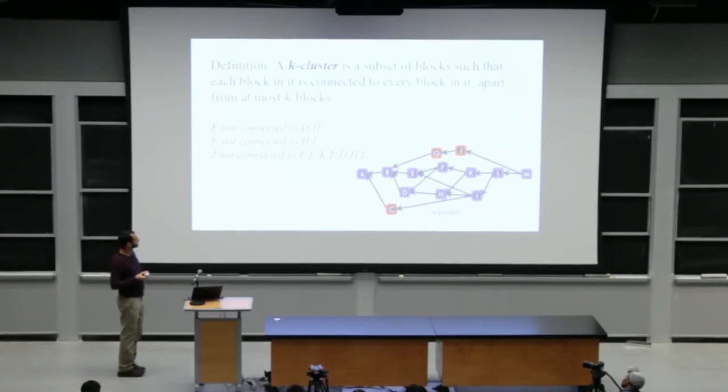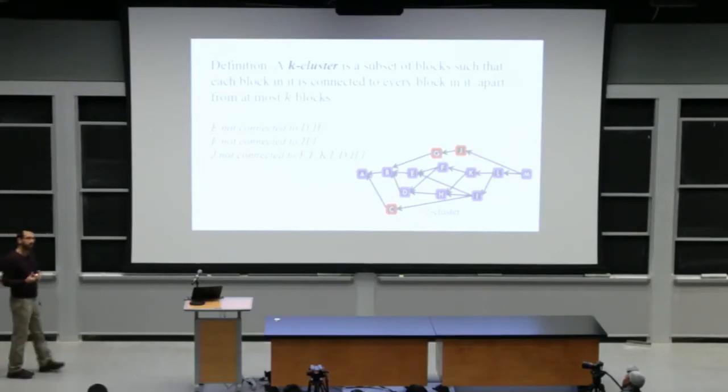So to converge on our protocol, what our protocol actually is, let's introduce a short definition, a formal definition. A K cluster is a set of blocks. Here are denoted, marked with blue color, a set of blocks which are well connected in the dag. What do I mean by well connected? Every block is either an ancestor or a descendant of all blue blocks apart from at most K.